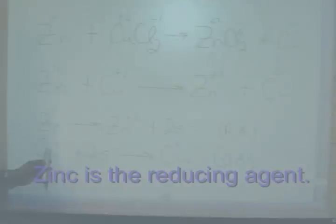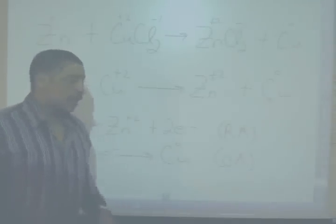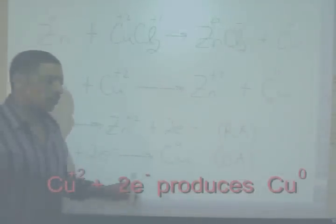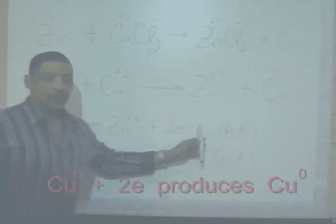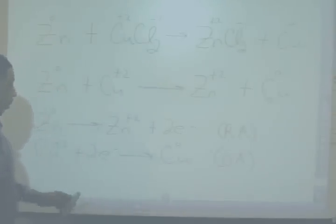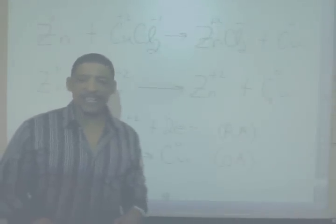Copper starts as a plus two charge, gains two electrons to become copper metal. Copper is allowing the process of oxidation to occur by accepting the two electrons released by zinc. These two half reactions must occur simultaneously, by the way. So, when copper gains the two electrons from zinc, copper is acting as an oxidizing agent.